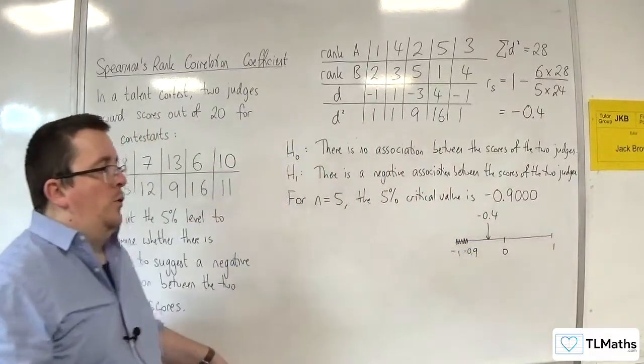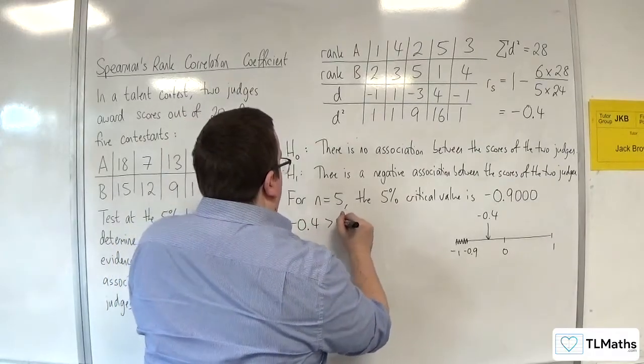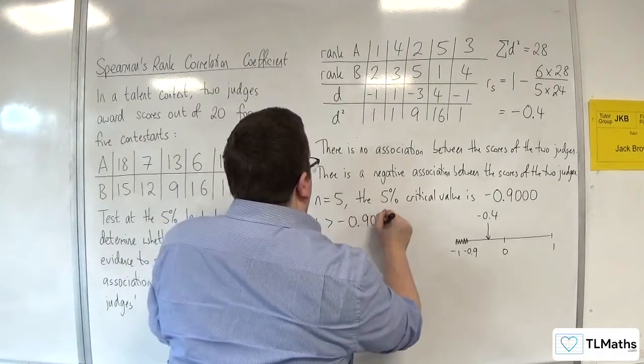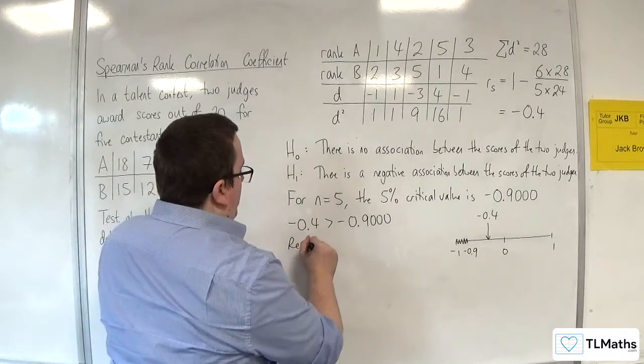So, clearly, minus 0.4 is greater than minus 0.9000. So, the result is not significant.